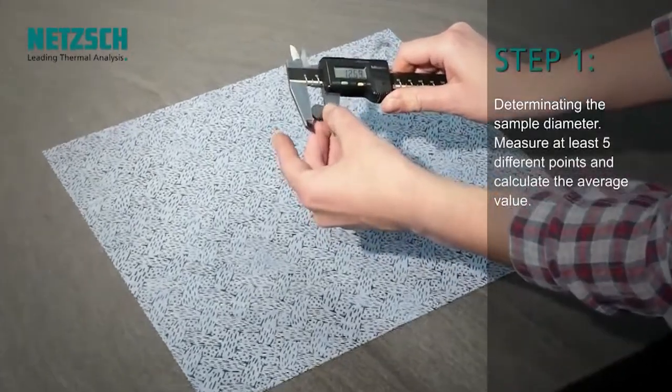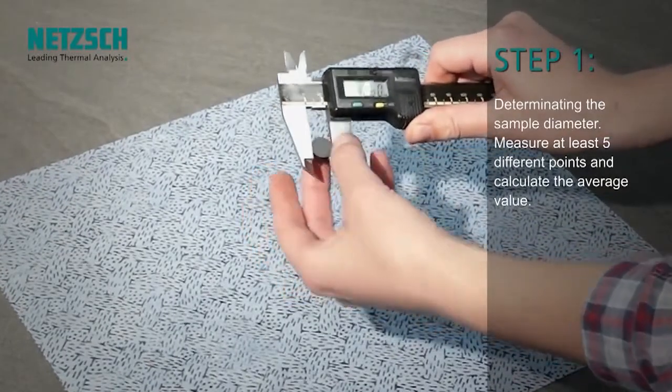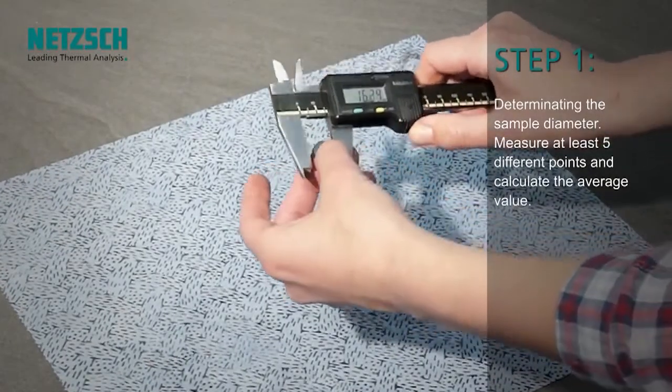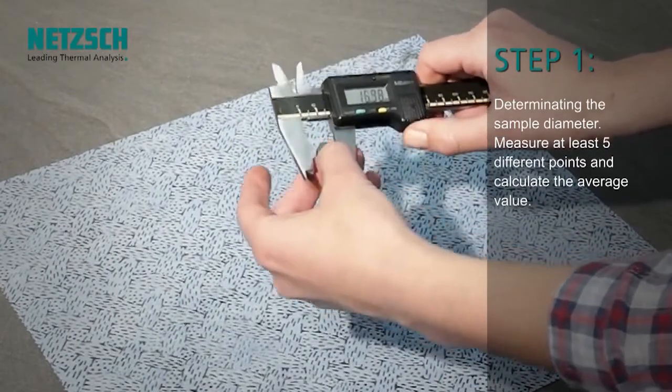Now determine the diameter of the sample. Be sure to measure at least five points of the sample and calculate the average value.